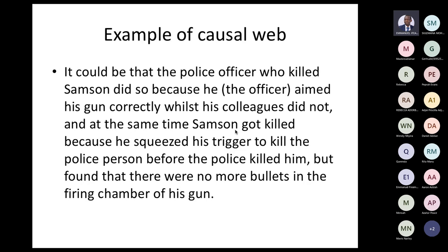For a causal web example: the police officer who killed Samson did so because he aimed his gun correctly while his colleagues did not. At the same time, Samson tried to squeeze his trigger to kill the officer first, but found there were no more bullets in his gun. Several things were happening simultaneously — the officer aimed correctly, Samson aimed back, but the difference was that Samson had no bullets left while the policeman did. Because all these things were happening at the same time, we call it a causal web.